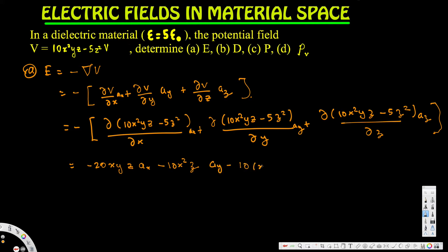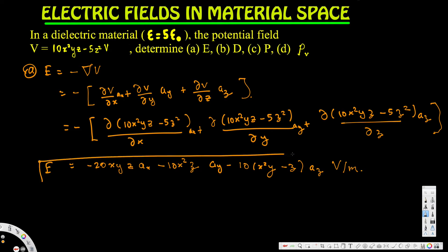...minus 5z² with respect to z in the az direction. So the electric field E equals negative 20xyz ax minus 10x²z ay minus (10x²y minus z) az, in volts per meter.